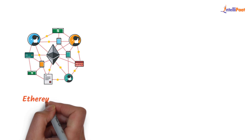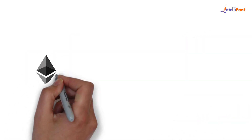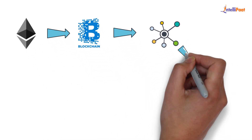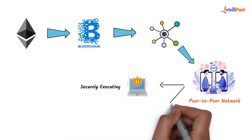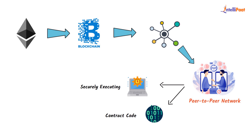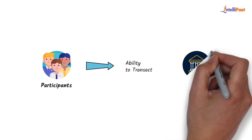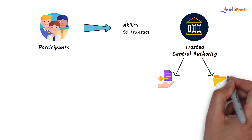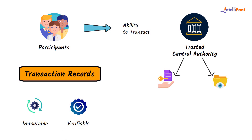Now we'll talk about the Ethereum network and its decentralized nature. The network involving Ethereum is a blockchain platform which is decentralized in nature, as it creates a peer-to-peer network for securely executing and verifying smart contract code. Participants have the ability to transact with one another without relying on a trusted central authority. They have full ownership and visibility of transaction data since transaction records are immutable, verifiable, and securely distributed across the network.